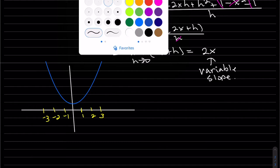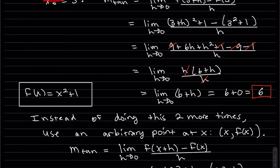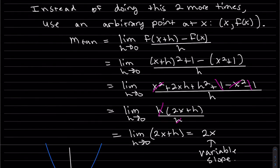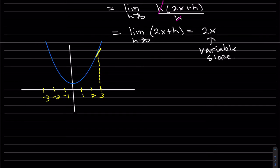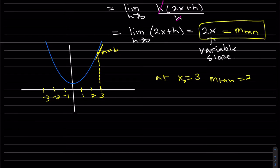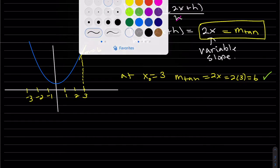At x equals three, the slope is six, which is what we found before. Drawing a tangent line there, it's a bit steep, with slope six. So at x naught equals three, m_tan equals 2x = 6. That matches what we got in the previous problem. Let's do the other two points now.